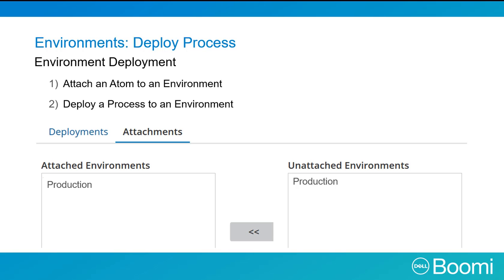You can attach a process to one or more environments via the Deploy tab. Simply highlight the process in the Processes pane. Once you have chosen the process you want to deploy, click the Attachments tab. There are two columns: Attached and Unattached Environments. From the Unattached Atoms column, simply select the environment or environments you want to deploy and click the arrow pointing to the left to attach the environment. Once complete, the selected environment will then appear under the Attached Atoms column. Our next activity demonstrates how to complete the deployment.